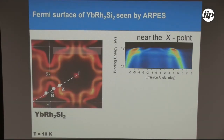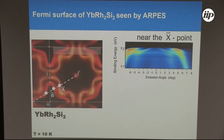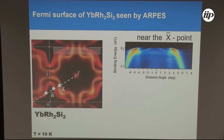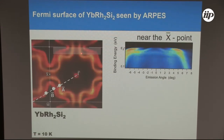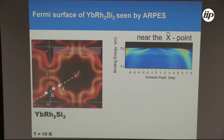From ARPES we are also able to derive the iso-energy surface and the Fermi surface, which is most interesting. Here I want to show you the Fermi surface taken for terbium rhodium disilicide at 10 K. The orange feature is the bulk-derived Fermi surface, while the red one is a surface state.